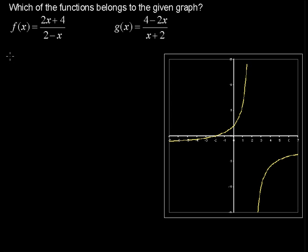So for f of x, we have a vertical asymptote when the denominator equals 0, because we can't let the denominator of any fraction equal 0. So vertical asymptote when 2 minus x equals 0. That is when x equals 2. So a vertical asymptote of x equals 2.